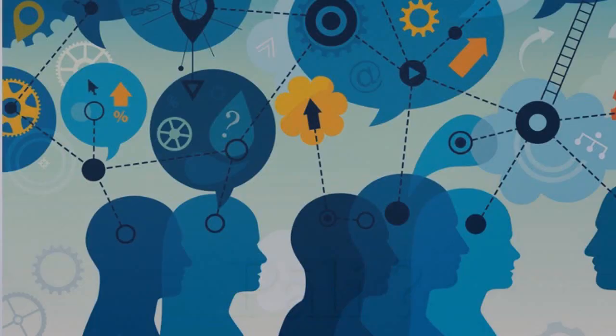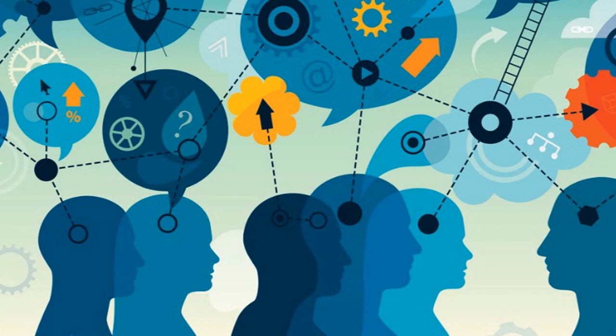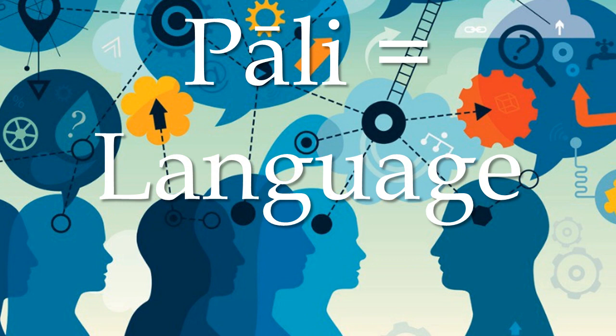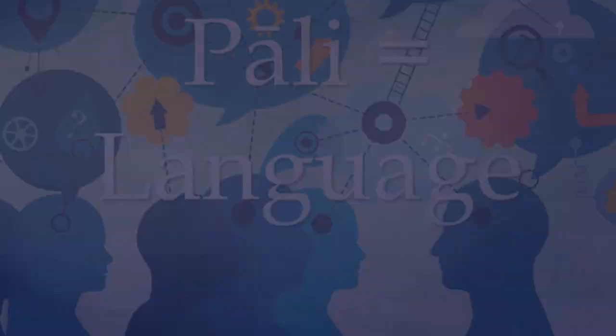It's only really in comparatively modern times that the word Pali has been used to refer to the name of a language. It's only really in the last 200 years, and in the West, that the language of the Theravada canon has been referred to as Pali. The first use of the term in Western literature is attributed to Simon de la Loubraire, a French envoy to the King of Siam, modern day Thailand, in 1687.